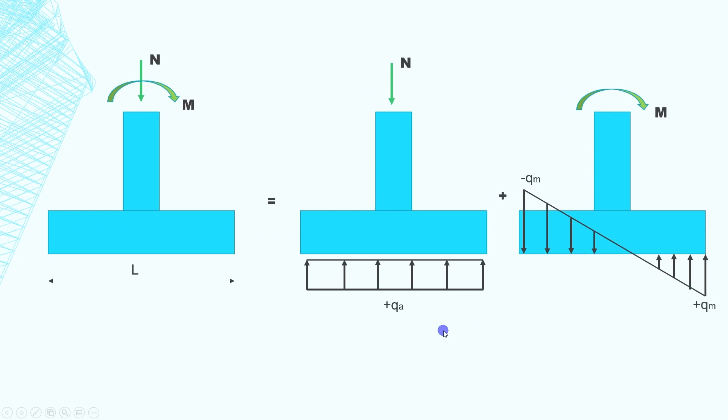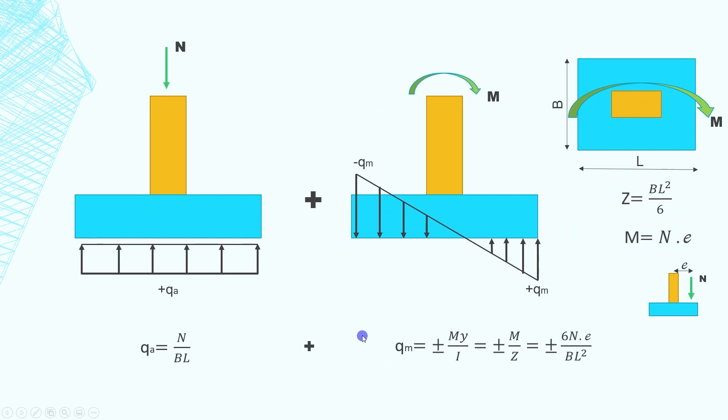As we introduce moment in our structure, the bearing pressure distribution under the footing can be determined as the superposition of the uniform bearing pressure due to the axial load N and the linearly bearing pressure due to the moment M, as I show in this slide. Basically you're going to add this pressure with this pressure and you will have a new pressure distribution that takes into account axial force and bending moment. We're going to go over this process right now.